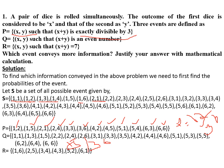For event R, x+y must equal 7. Listing the valid pairs: (1,6), (2,5), (3,4), (4,3), (5,2), and (6,1). That gives us 6 favorable outcomes. So the probability of event R is 6/36.